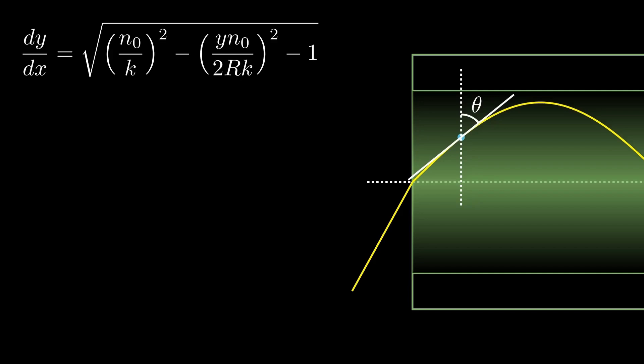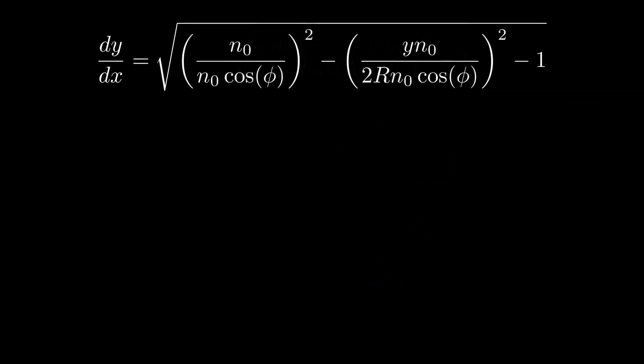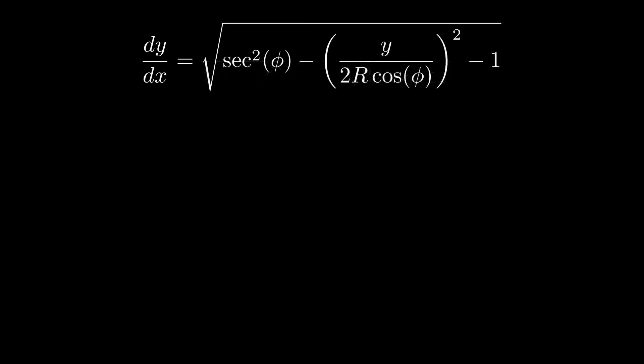However, let's try to get rid of the variable k entirely by using a trick. If we consider the point where light enters the core and define phi as the complement of theta, we have k equals n0 sine 90 degrees minus phi, or just cosine of phi. If we take this expression for k and plug it in, it gets rid of the variables k and n0 at the expense of introducing a new variable phi. Finally, let's clean up things a tiny bit more by turning secant of phi squared minus 1 into just tan of phi squared.